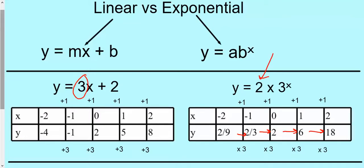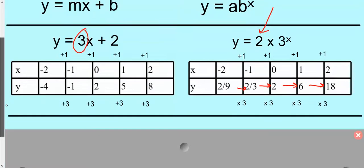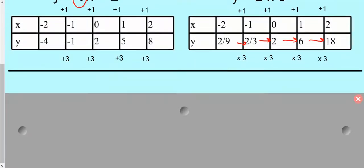This 2 is kind of like the y-intercept. It's your initial value. It's when x equals 0.